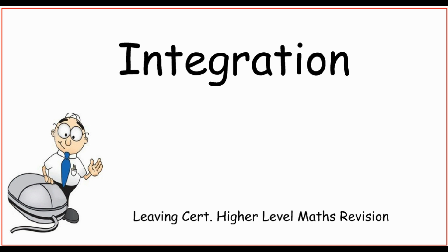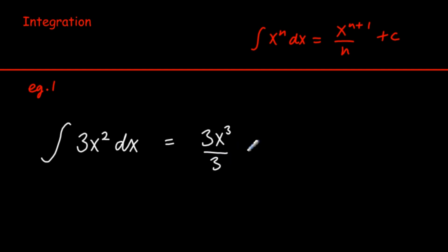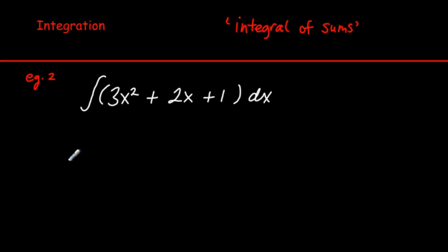These videos are to help with integration. Let's look at the basic example first: integrate 3x² dx. The basic rule is we raise the power by 1 and divide by the new power, and we add on the constant of integration C. This gives us x³ plus C.